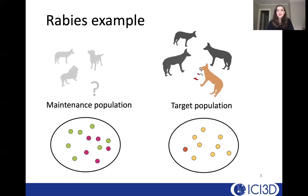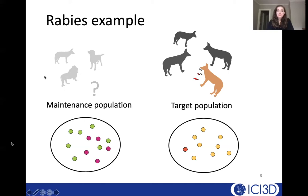In this example, we'll be thinking about a rabies system, and it's a little bit different than some of the other systems we've been talking about in the course in that there will be two types of transmission. One that is similar to what we've talked about — transmission within a population of interest. In this case, it will be a population of jackals and we'll be thinking about rabies transmission among the jackals. But rabies isn't normally maintained in this population, so there's a separate maintenance population — it could be domestic dogs or other carnivores like lions — that have rabies circulating in their own population and can occasionally infect jackals.